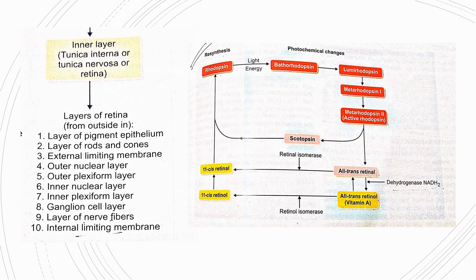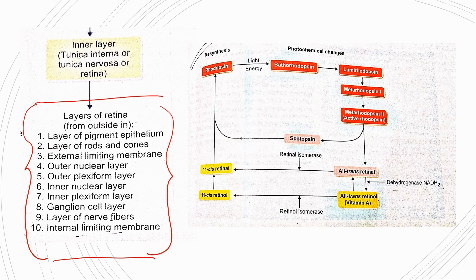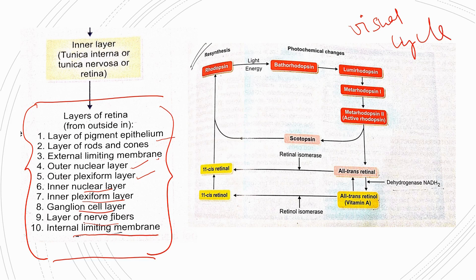This is your layers of retina chart. The 10 layers of the retina are: layer of pigment epithelium, layer of rods and cones, external limiting membrane, outer nuclear layer, outer plexiform layer, inner nuclear layer, inner plexiform layer, ganglion cell layer, nerve fiber layer, and internal limiting membrane. These layers should be mentioned in the correct sequence.